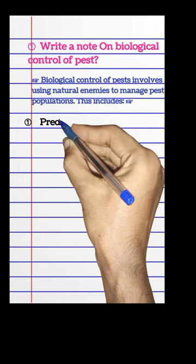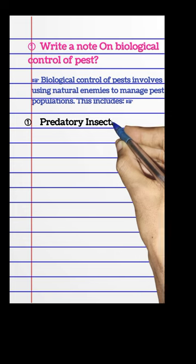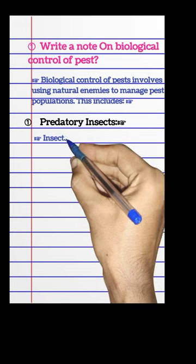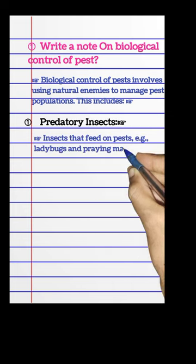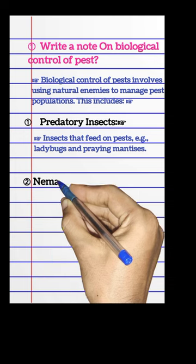Predatory insects — insects that feed on pests. Examples include ladybugs and praying mantises.